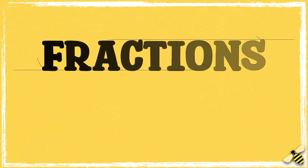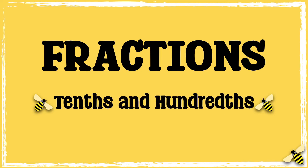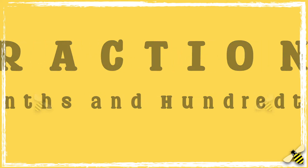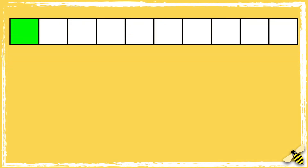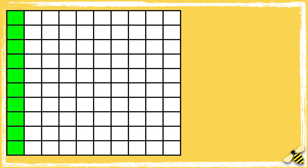In this video we're going to look at tenths and hundredths. Here is a bar with ten squares — one tenth of the bar is green. Now we have a hundred squares. When ten squares are shaded green it's ten hundredths. Each row shows one tenth.